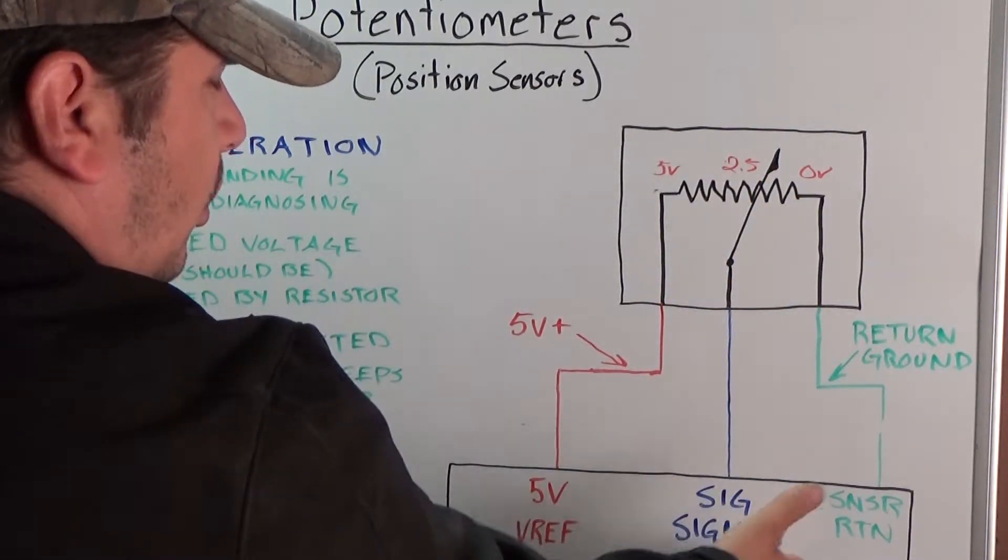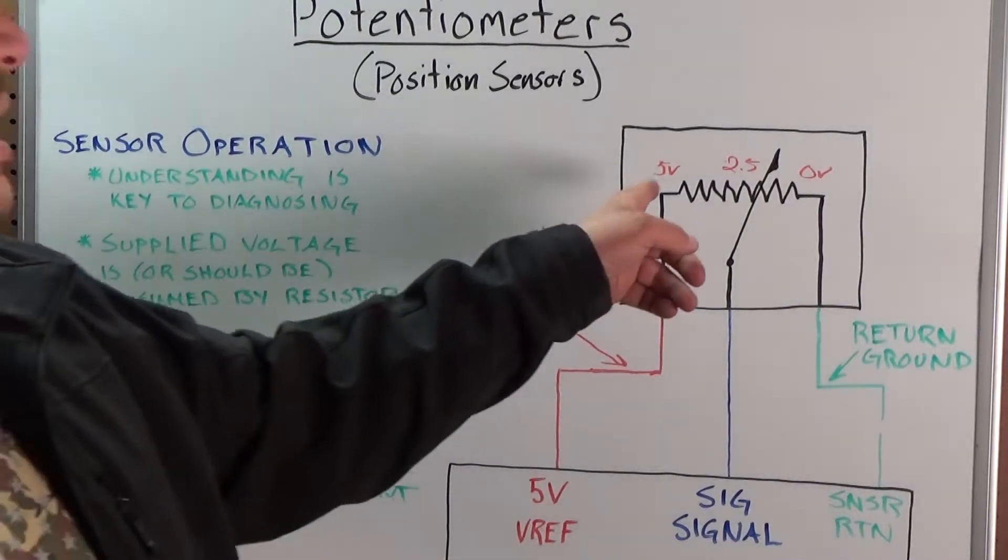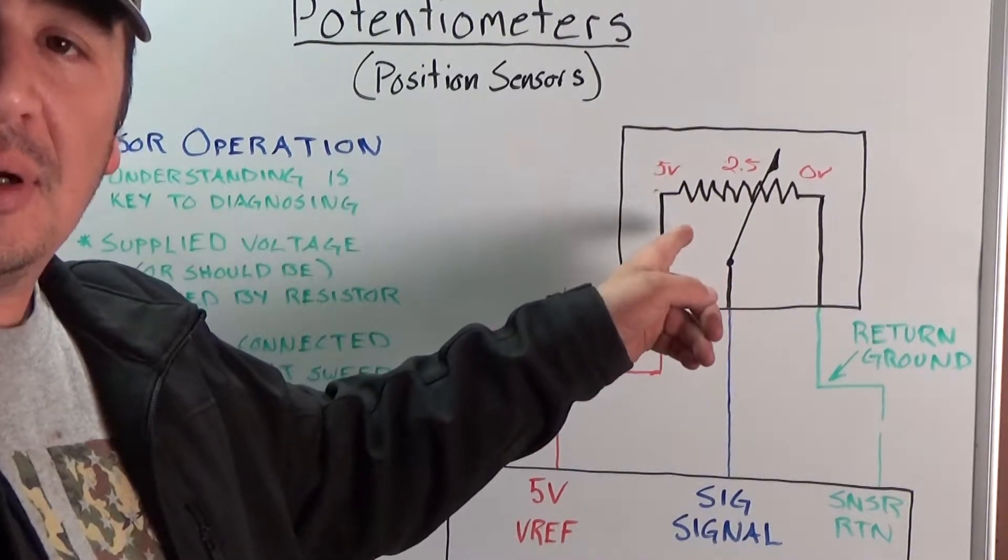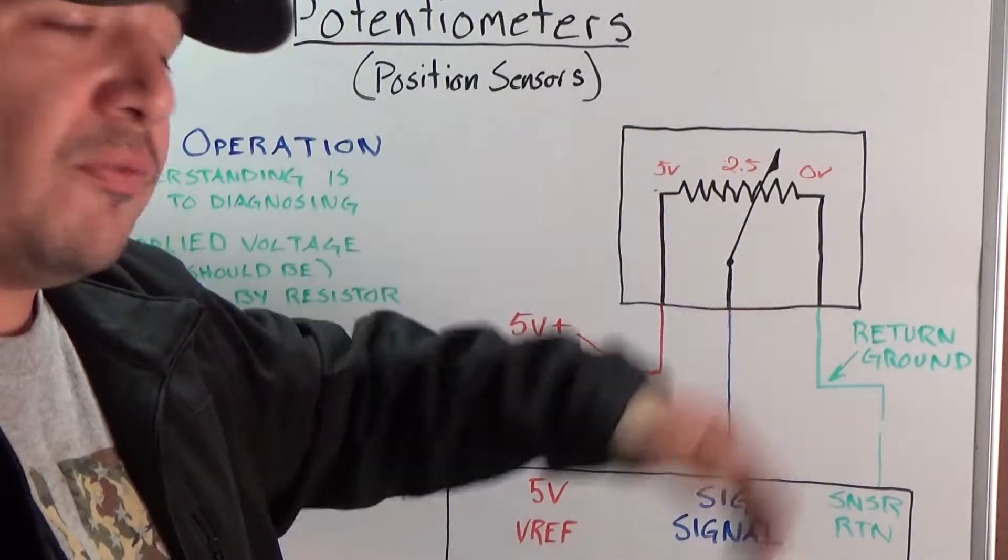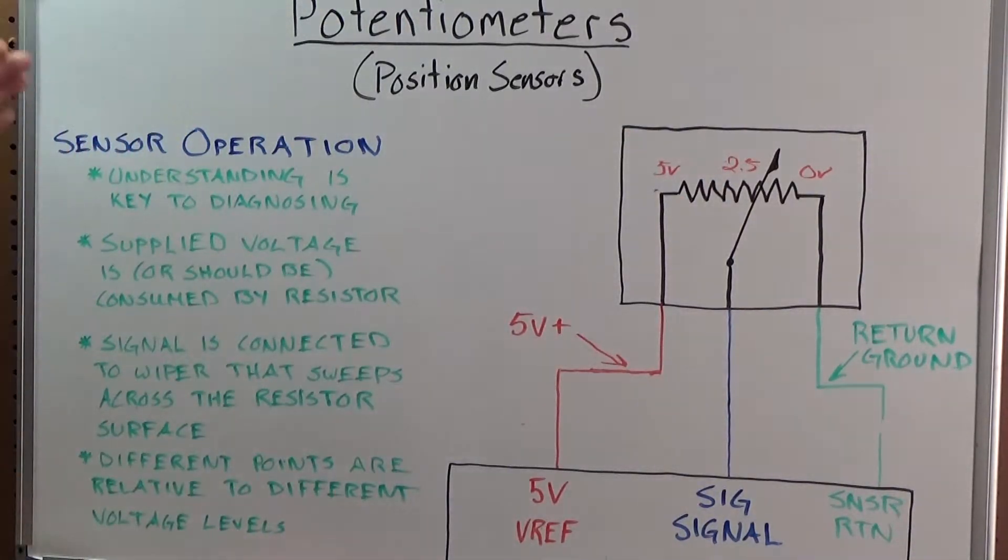So it's actually a very simple setup and all it does is as this arm moves, the voltage on the signal wire changes because it's at a different point along the resistive surface and there's different voltage available there. The points I have laid out here, we'll just walk through them.